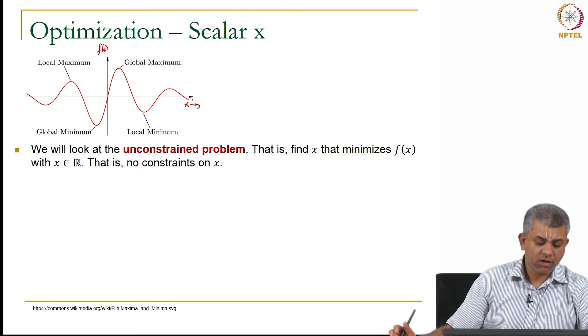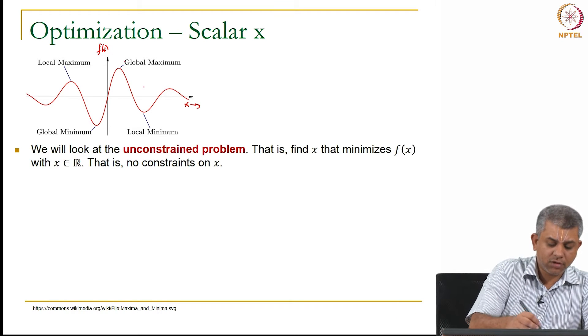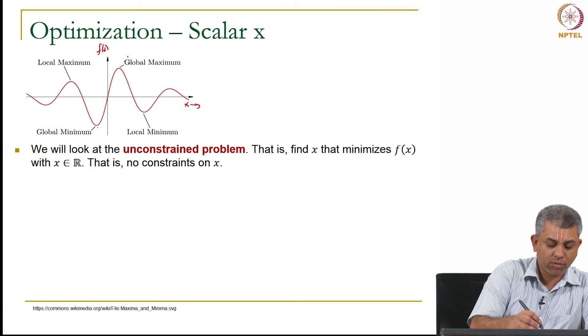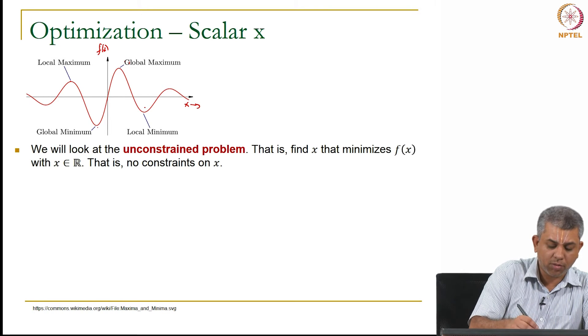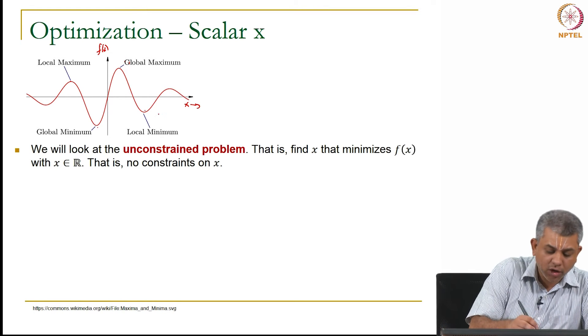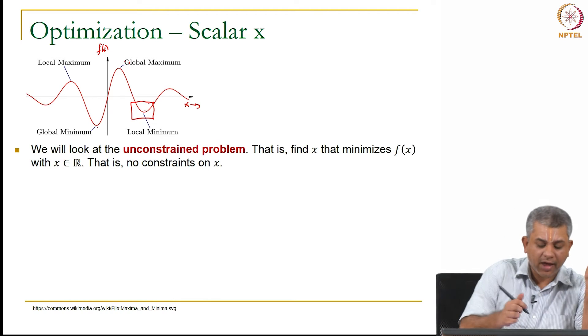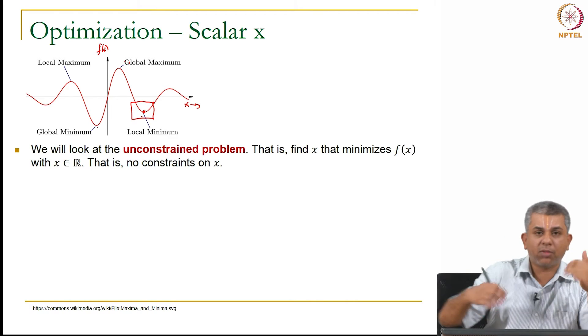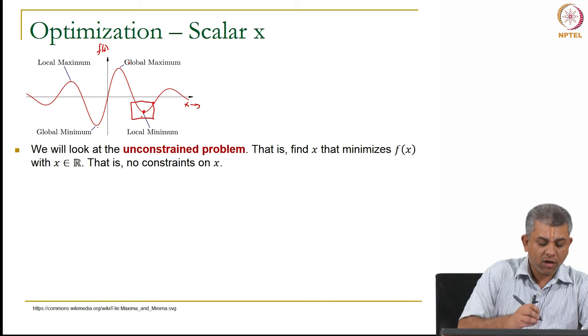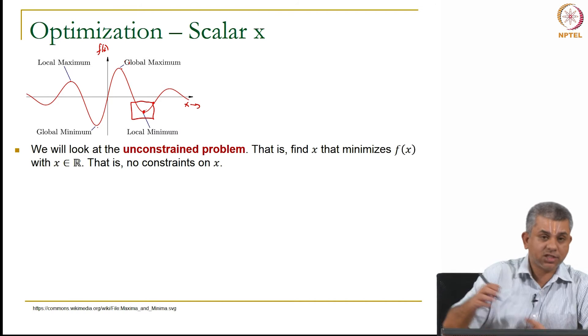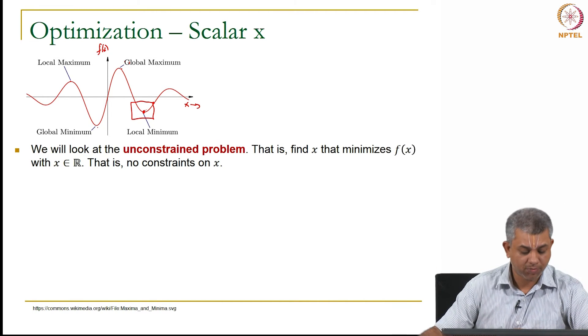So in such a case, you could have some global minimum and global maximum and you could also have a local minimum and local maximum. That is locally, if I just put a box here, all the values around the local minimum are greater than the local minimum. But this might not be the global maximum or the global minimum.